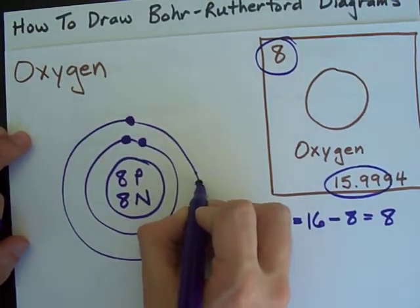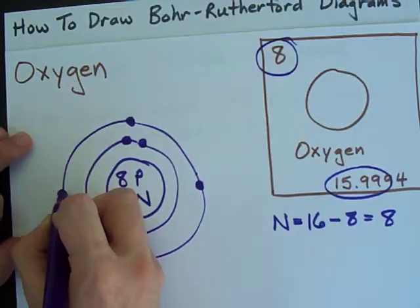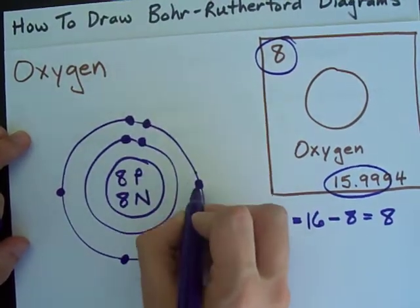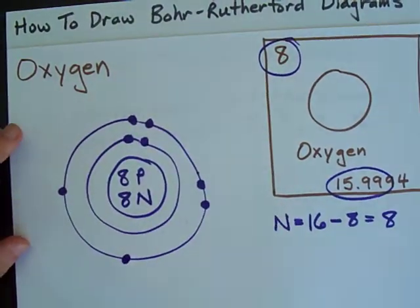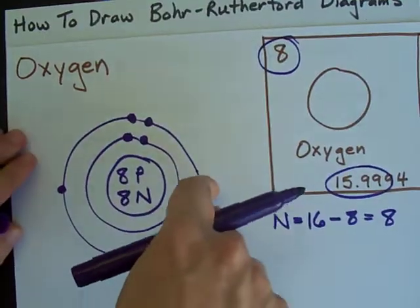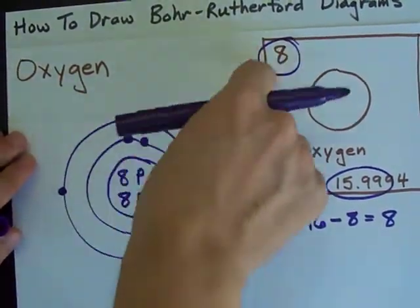1, 2, 3, 4, 5, 6, 7, 8. 8 electrons. Good.